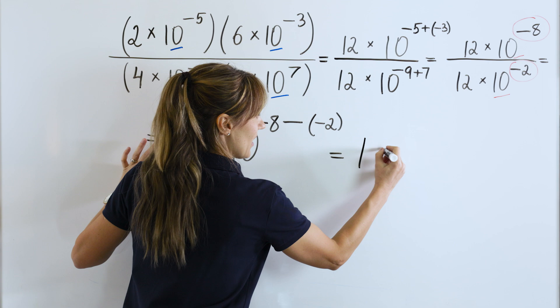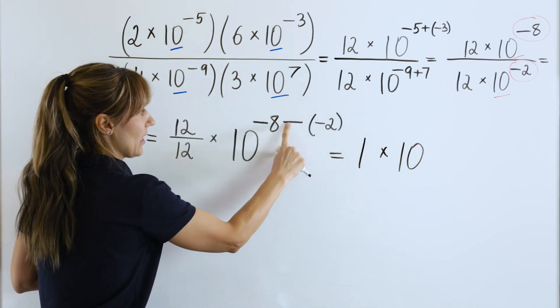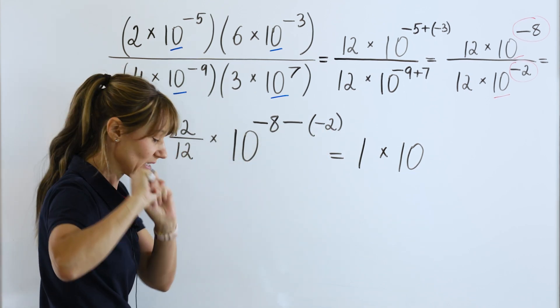Times 10 to what power? Negative 8 minus negative 2. Minus negative 2 will become plus 2. So, we have negative 8 plus 2.